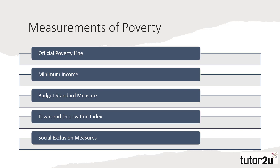The first measure to consider is the official poverty line, an objective measure used in official government statistics. Secondly, the minimum income, a measure that looks at how much individuals and families need to earn in order to achieve an acceptable standard of living.